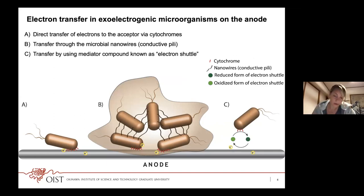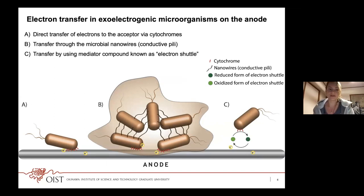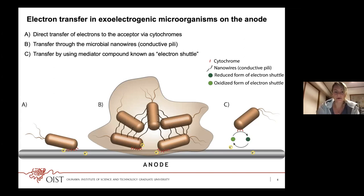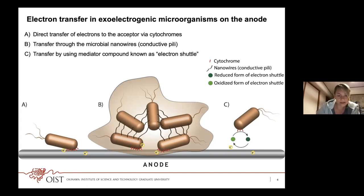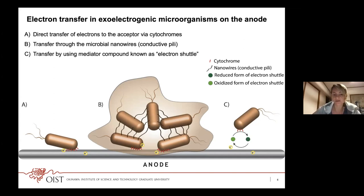How does this extracellular electron transfer happen? There are three main types. First, bacteria can directly transfer electrons to the electrode via cytochromes — as shown in the picture, the bacteria are closely attached to the electrode with cytochromes acting as electron transporters. Second, bacteria can use so-called microbial nanowires or conductive pili to transfer electrons. Bacteria can cluster and, as shown in the first photo, they connect together with nanowires, creating a large biofilm and transferring electrons via nanowires to each other and to the electrode.